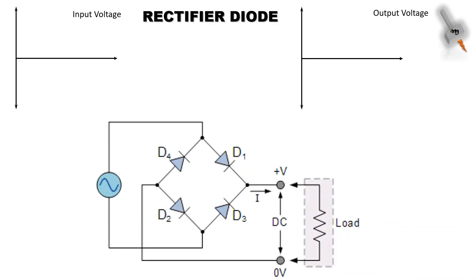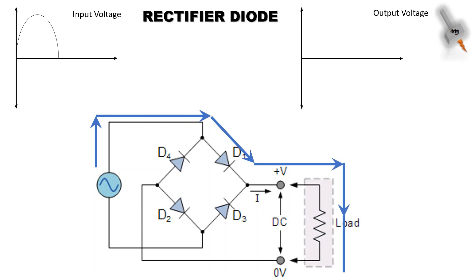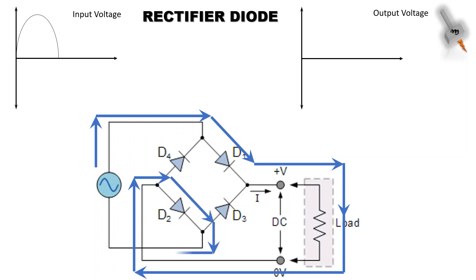Now let's see an example of how a rectifier diode works. As stated earlier, a rectifier diode is forward biased. So when a sinusoidal AC signal is applied, for the positive half cycle, diodes D1 and D2 will conduct. Note the direction of the current in the load — for the positive half cycle of the input AC voltage, the output voltage is of the same polarity.